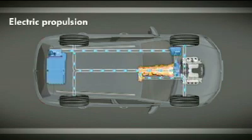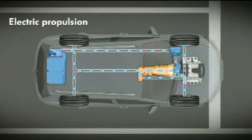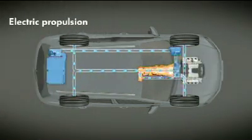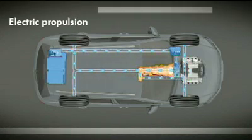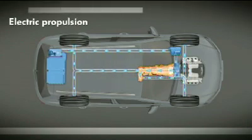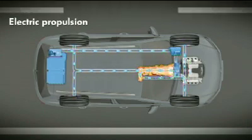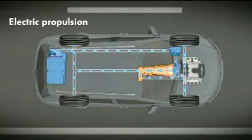When the driver gently accelerates the new Touareg hybrid, it starts off under electric power. The electric motor alone drives the new Touareg up to a speed of 50 km per hour. The TSI petrol engine remains decoupled by means of the separating clutch and so does not consume any energy.